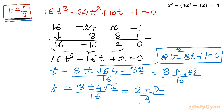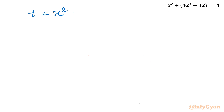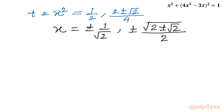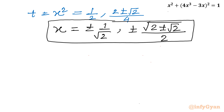We have calculated three t values: t = 1/2 (base solution), and t = (2 ± √2) / 4. Since t = x², we get x = ±√(1/2), and x = ±√((2 ± √2)/4), giving us six solutions in total.